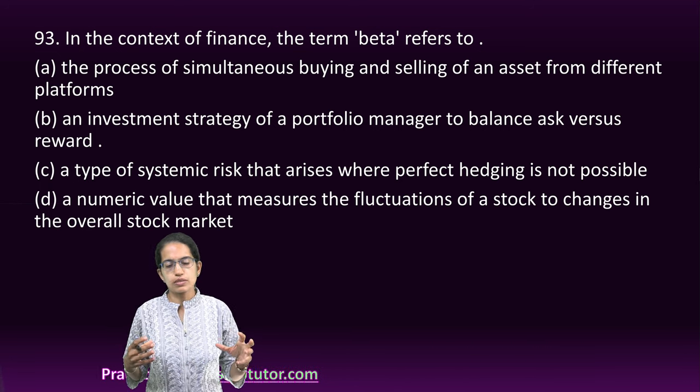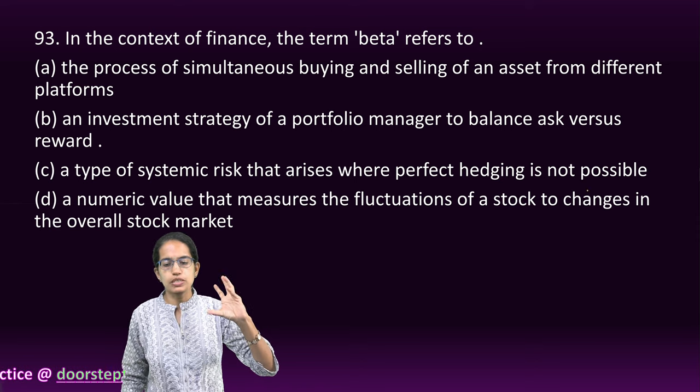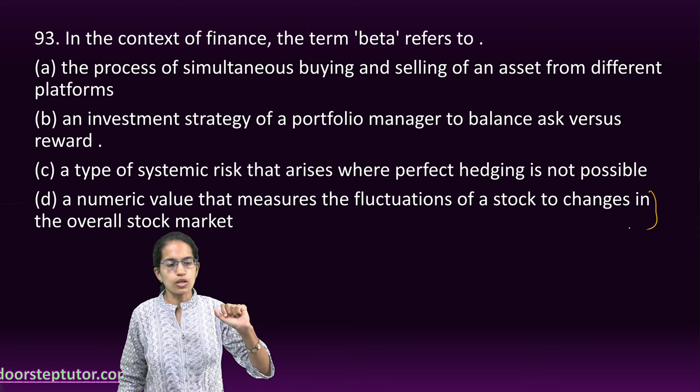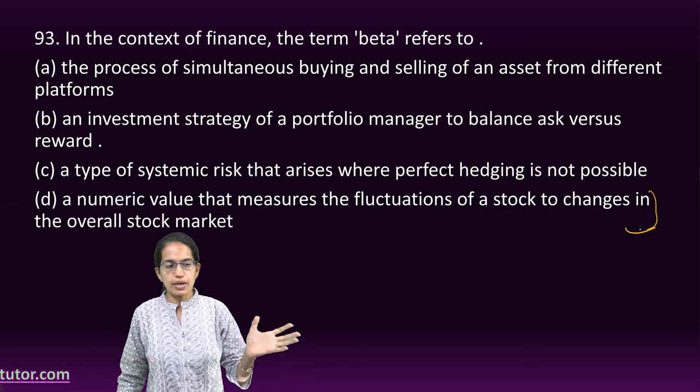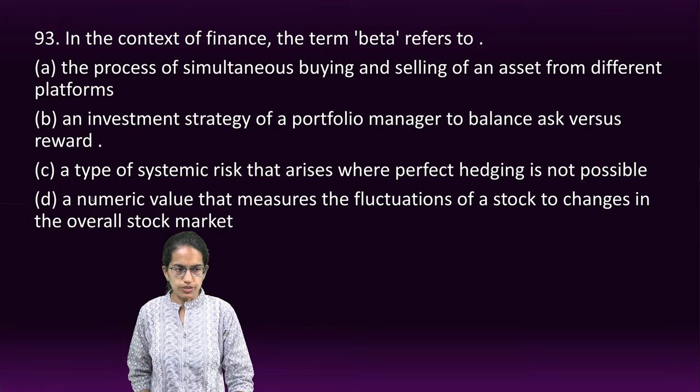The next question is about Beta. Beta is a numeric value which measures the fluctuation of a stock relative to the stock market overall. So option D is the right answer.